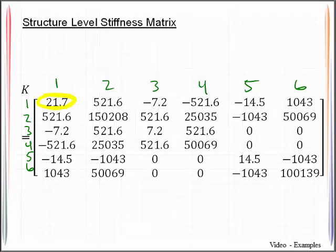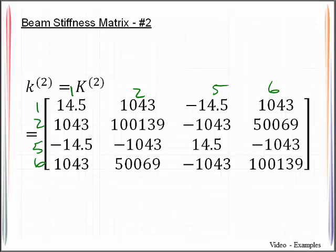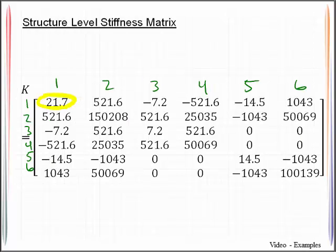For instance, to get the term 1,1, we'd go to matrix 1 and grab the 1,1 term. Then we'd go to matrix 2, grab the 1,1 term, and add those. So the 7.2 and the 14.5 add together to get 21.7.